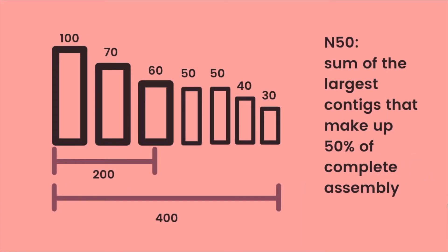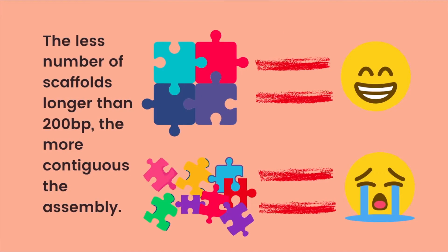As a side note for those who do not know the terms, N50 is the sum of all largest contigs portraying 50% of the complete assembly, so the larger it is, the more contiguous the genome assembly. We also want less number of scaffolds longer than 200 bp as that also indicates a more contiguous genome assembly.